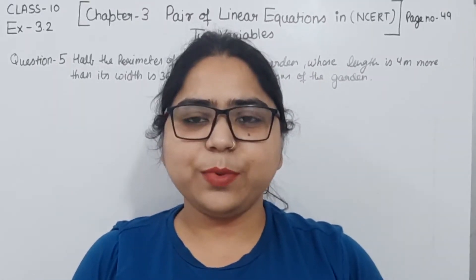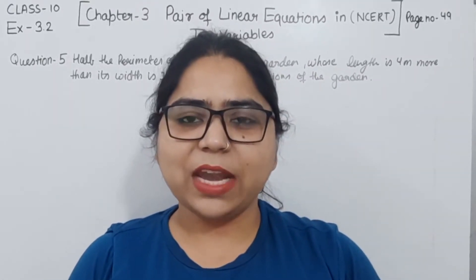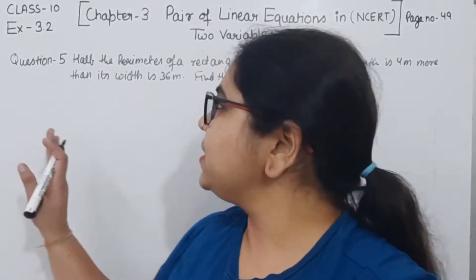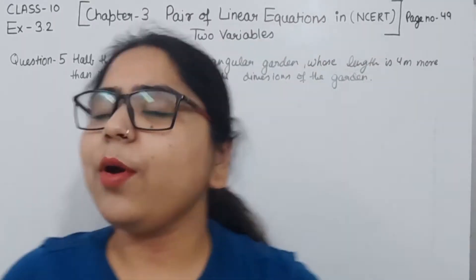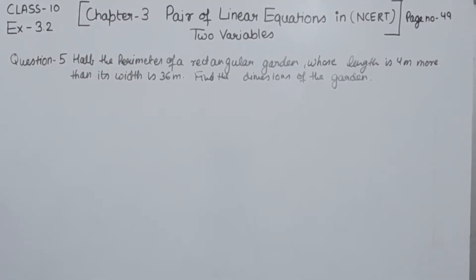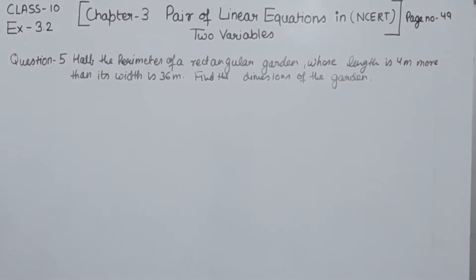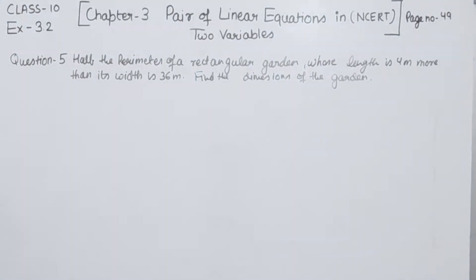Hello everyone, this is Preeti. We are here with another question of exercise 3.2, page number 49, question number 5. Half the perimeter of a rectangular garden whose length is 4 meter more than its width is 36 meter. Find the dimension of the garden.